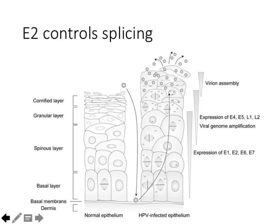Early on, E2 levels are low and we've got E6 and E7 being expressed. At some point, when E2 levels get really high, it starts to shut off E6 and E7 expression. We start to find expression of some late-early genes, E4 and E5, and then the capsid proteins L1 and L2. So E2 is a really big regulator of what genes get expressed and when — it's an interplay between E2 and host proteins.